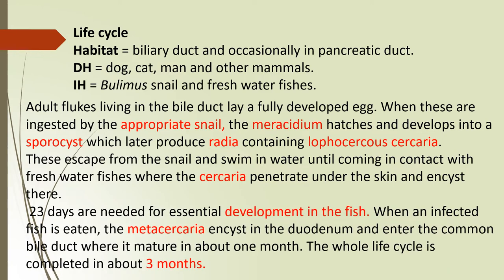About 23 days are needed for encysted development in the fish. When an infected fish is eaten by humans, the metacercaria excysts in the duodenum and enters the common bile duct, where it matures in about one month. The whole life cycle is completed in about 3 months. Definitive hosts include dog, cat and man, while intermediate hosts are the Bulinus snail and freshwater fishes.